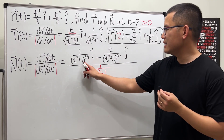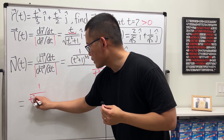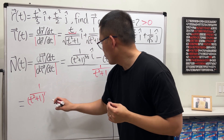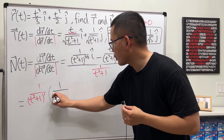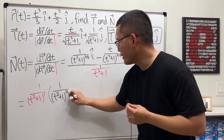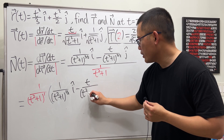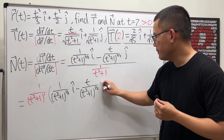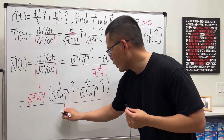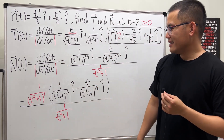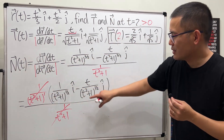We can factor out 1 over (t squared plus 1) from T'(t), leaving the vector with components 1 over (t squared plus 1) to the 1/2 power for i, and minus t over (t squared plus 1) to the 1/2 power for j. Dividing by the magnitude — which is 1 over (t squared plus 1) — these cancel, and N(t) is just that factored vector.